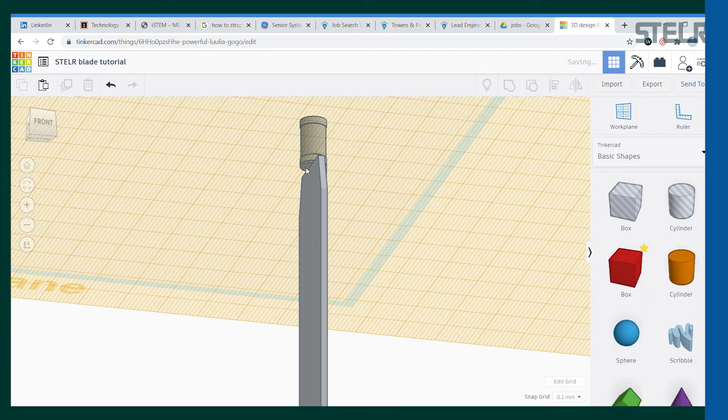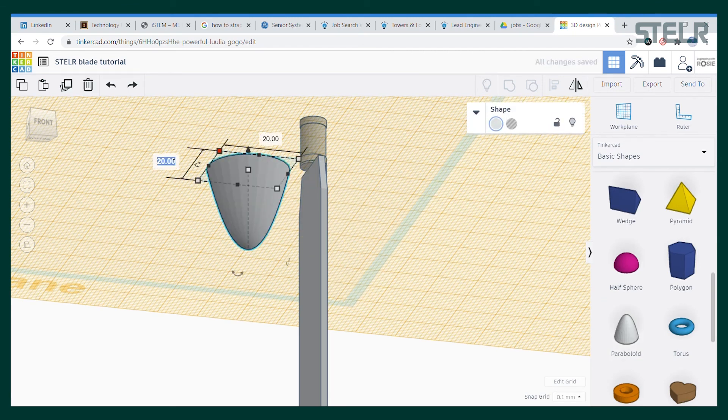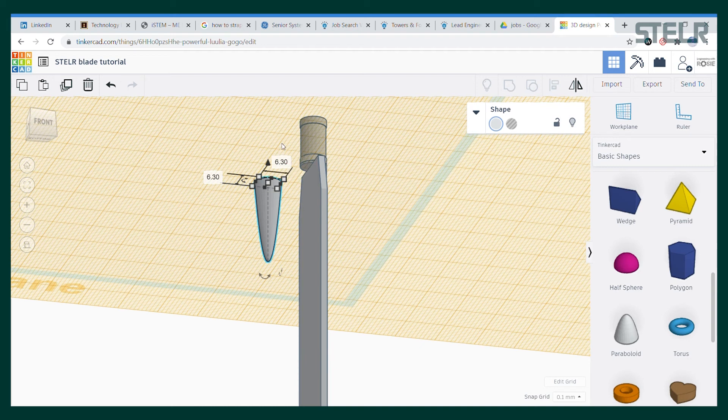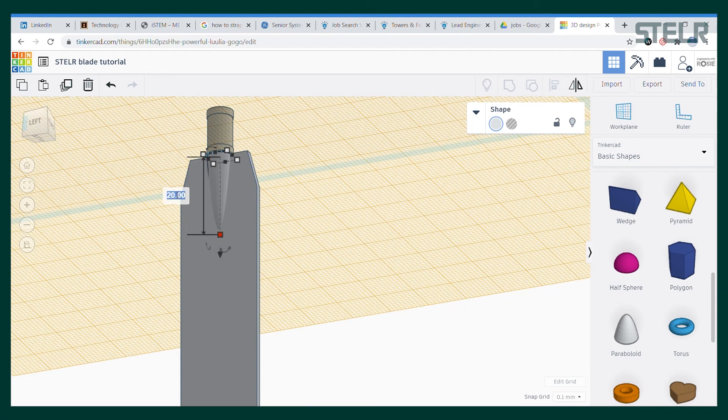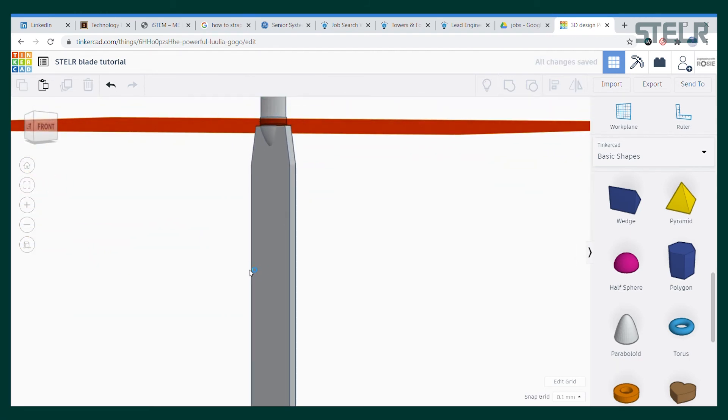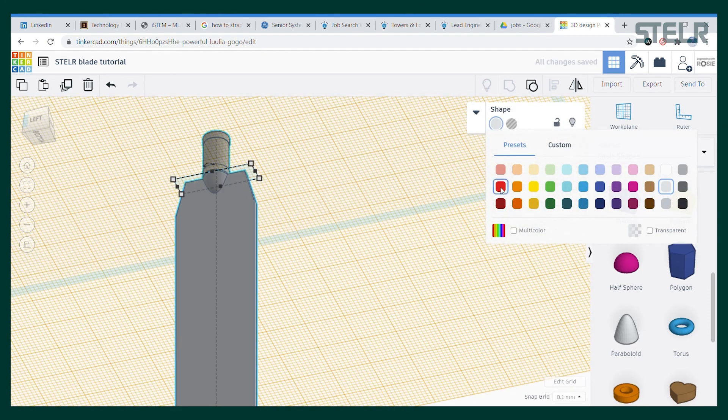So I'll make a work plane on that surface on the bottom of the cylinder and use the paraboloid again. It needs a diameter of 6.3 millimeters. I align it and then I think I'll add five millimeters of height. That looks great so I will group everything and I also want to make it red so it looks just like the original.